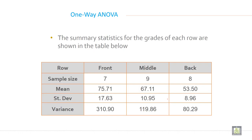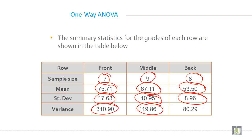The summary statistics for the grades of each row are shown in the table. Sample size front 7, middle 9, and back 8. Mean score 75, 67, 63. Standard deviation first front, middle, and back, then variance. So you have all the statistics calculated in this table.